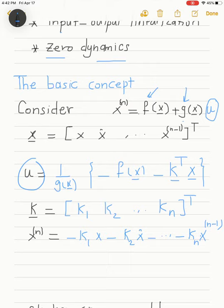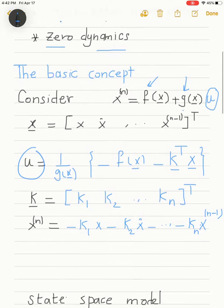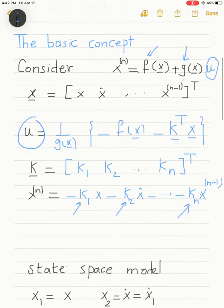As we can see, this is a homogeneous differential equation, and by the proper selection of k1, k2, up to kn, we can ensure that the characteristic equation has stable roots. We can even select them to control the rate of decay of the states to the origin.